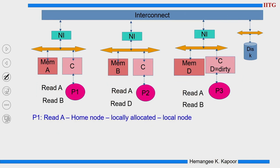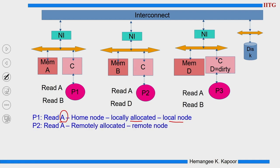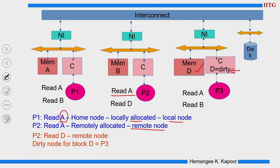Continuing the example: when P1 reads A, N1 is the home node for A — it is a locally allocated block and a local node. When P2 reads A, A is remotely allocated so it has to go to N1 to read through the network — it is a remote node for P2. When P2 reads D, D is also a remote node because D is sitting in the third node N3. And here D is a dirty node because N3 has modified the data item. So for block D, the dirty node is N3.